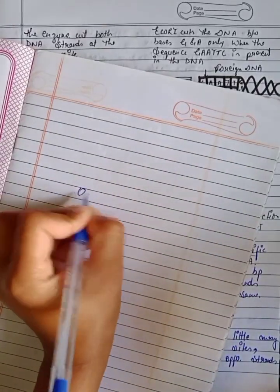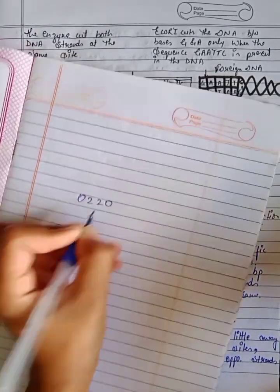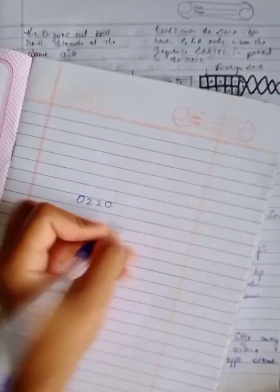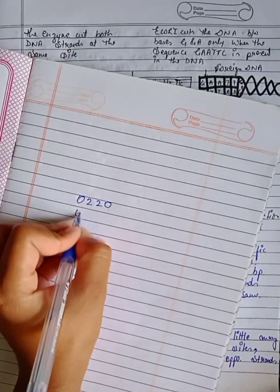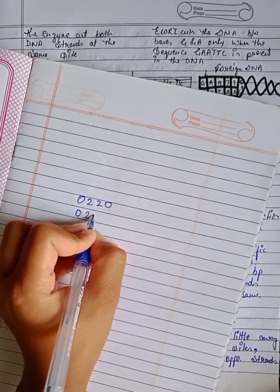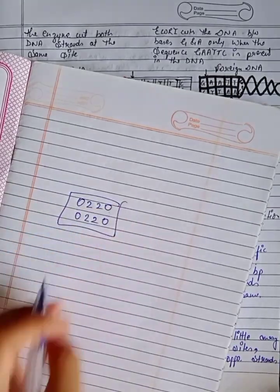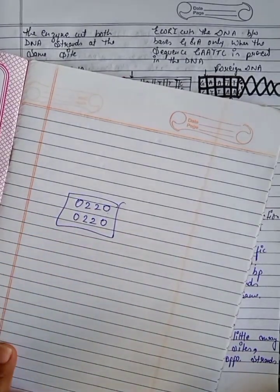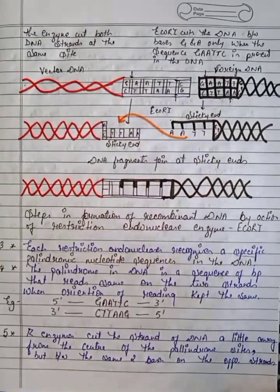For example, if we write the number 0220, it reads the same forwards and backwards — that is a palindrome. Similarly, a palindromic sequence in DNA reads the same on both strands.